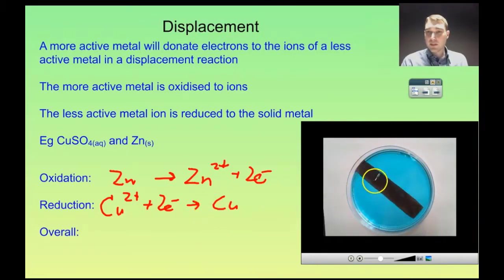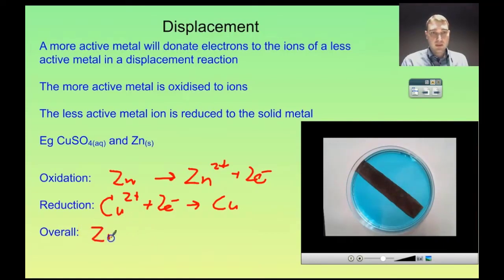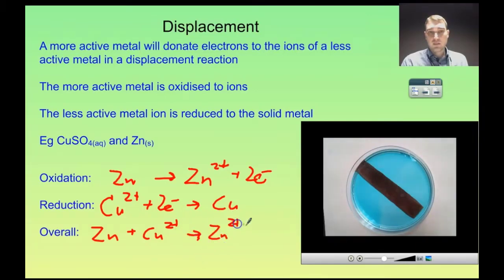As time goes on we can see that the blue color of the copper solution is getting lighter and lighter — we'll compare it at the end of the video to what it was at the start. Overall, we've got two electrons on either side of the arrow so no balancing needed: zinc plus copper ions gives zinc ions plus copper, and we can put our states in.